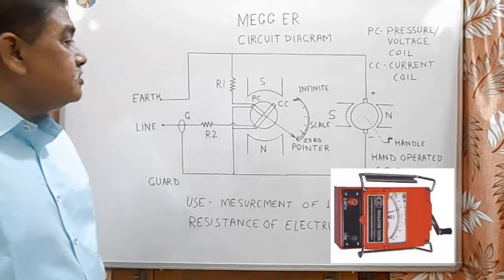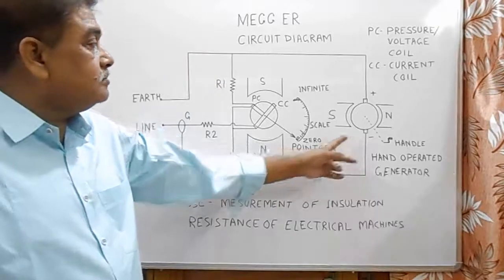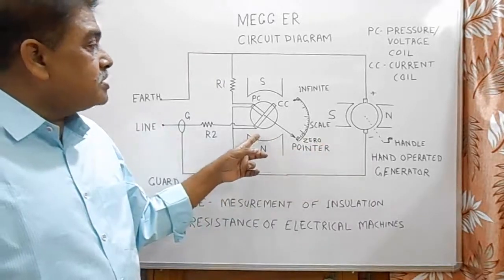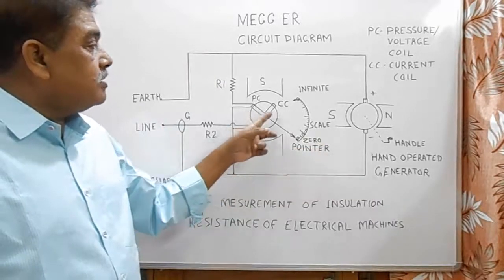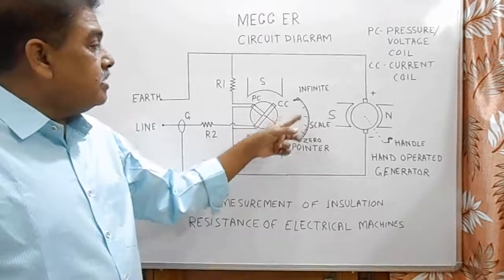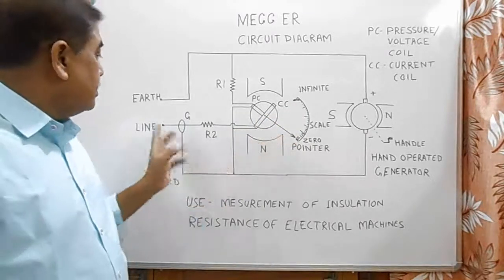Here main items are a hand operated generator, a movement system having pressure coil and current coil, dial and pointer, and these remaining circuits.